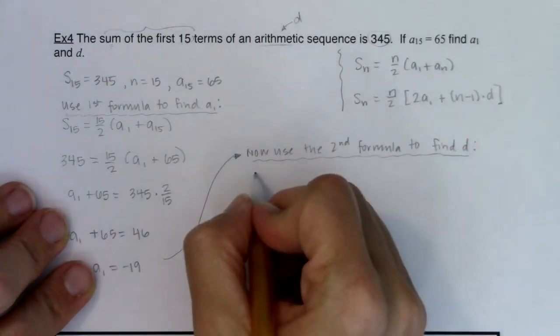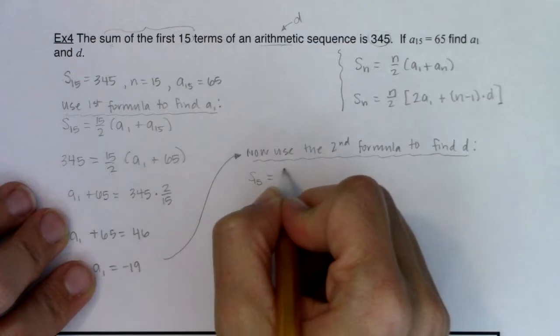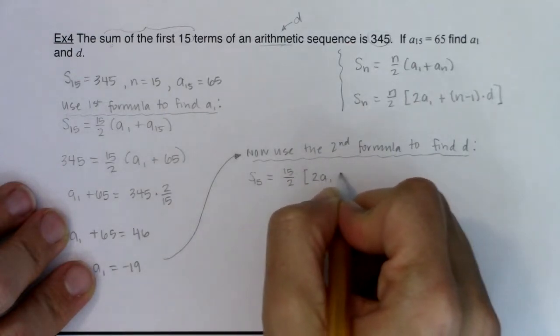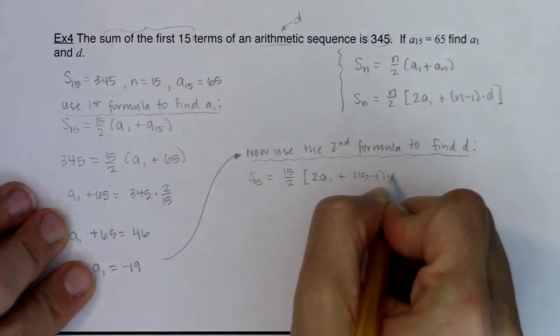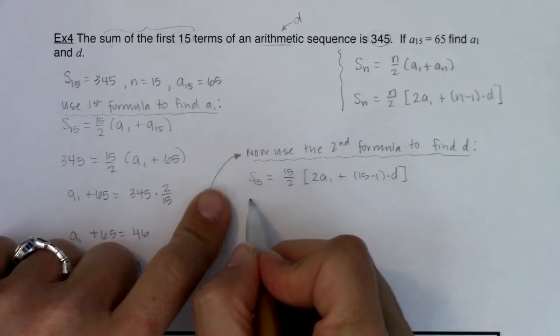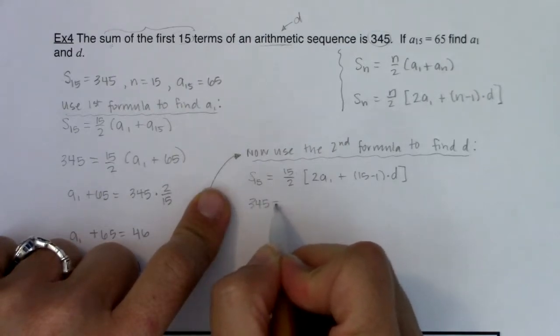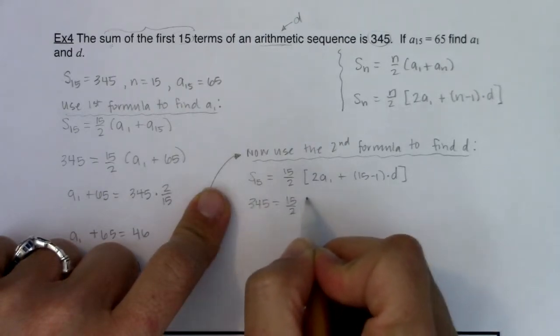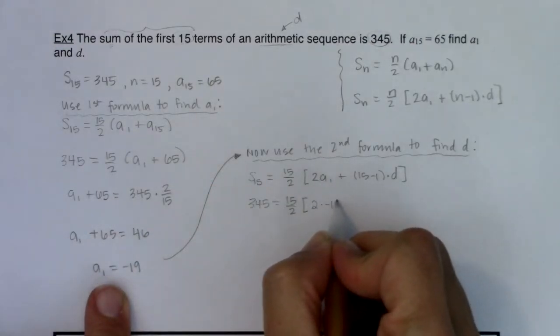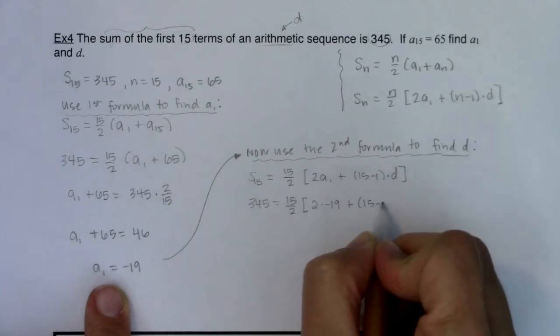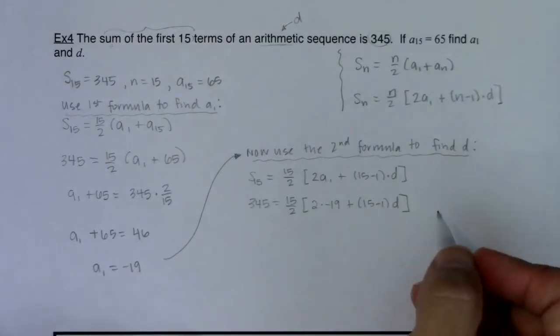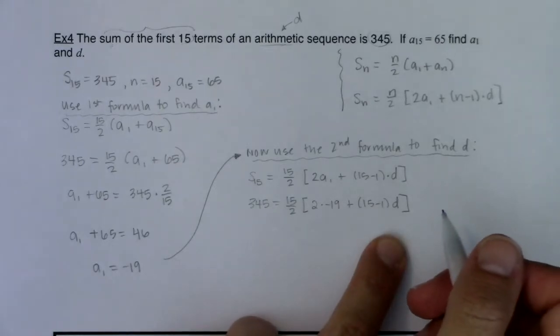So let's try this second formula. This would be s sub 15, that would be equal to 15 over 2, 2 a sub 1, plus 15 minus 1, times d. Let's start filling this in. We know s sub 15 is 345. This is going to stay at 15 over 2. I know a sub 1, I just found it, that's 2 times negative 19. This is going to be 15 minus 1 times d. And then you can see I have my equation, and the only variable left is d.